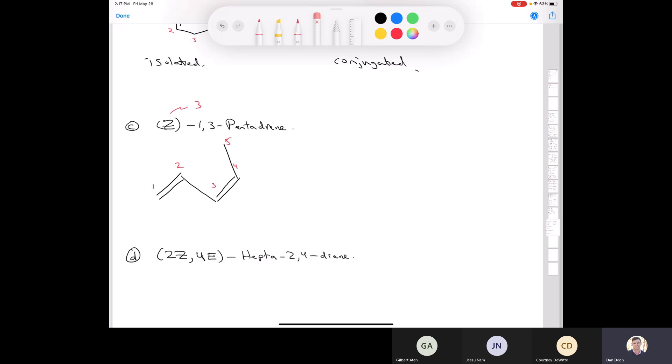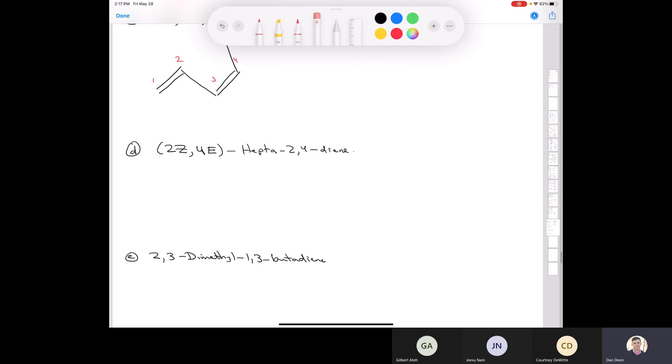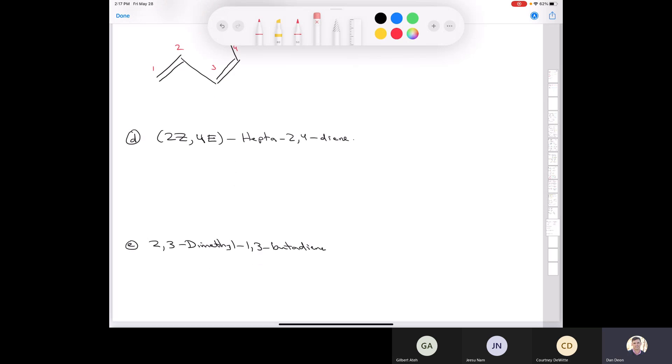And so this is Z,1,3-pentadiene. The next one, we've got two double bonds, 2Z,4E-hepta-2,4-diene. So let's just start by putting seven carbons, because this is a hepta. So if we have one, two, three, four, five, six, seven, like this.